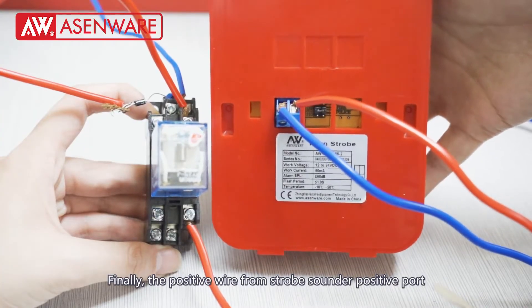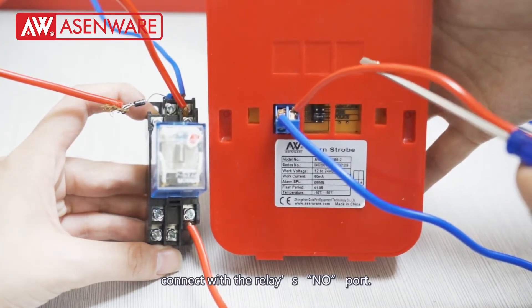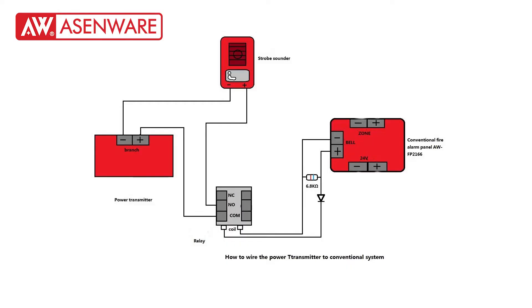Finally, the positive wire from the strobe sounder positive port connects with the relay's NO port.